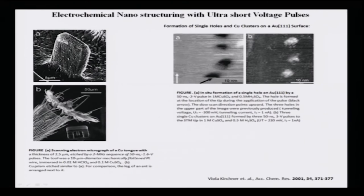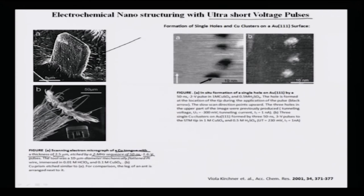ECMM is also applied using ultra-short voltage pulses to obtain a copper tongue, for example. This ECM image shows a copper tongue with a thickness of close to 2.5 microns, etched by a 2 megahertz sequence of 50 nanosecond pulses of 1.6 volts magnitude. The tool is a 10 micrometer diameter mechanically flattened piece of platinum, comparable in scale to an ant leg — this is a 50 micron scale versus a 5 micron scale.